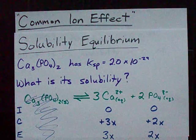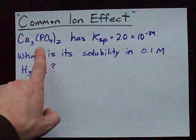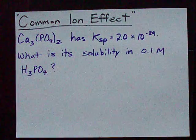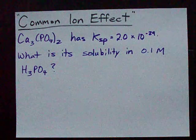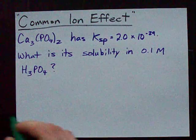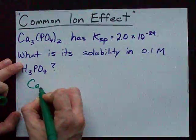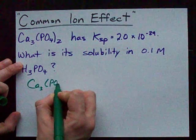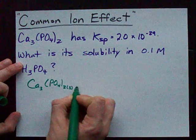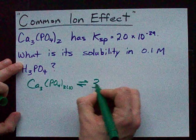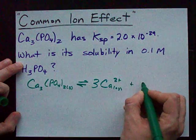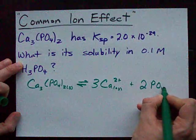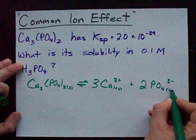What if we're asked about the solubility of calcium phosphate in phosphoric acid, 0.1 moles per liter of it? Let me show you. Calcium phosphate dissolves in water, that's calcium phosphate solid, to give you three calcium ions, each with a charge of plus 2, and two phosphate ions, each with a charge of minus 3.